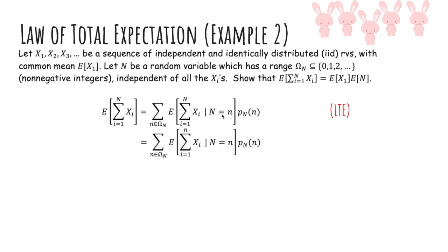Then what we can do is since we're given N equals little n, we can actually replace this top thing with a little n. And since N is independent of all the X_i's, we can drop this conditioning now because we're just having a sum from 1 to little n.